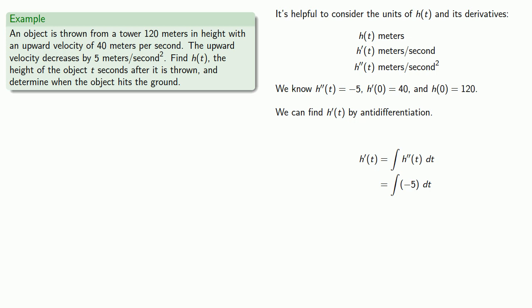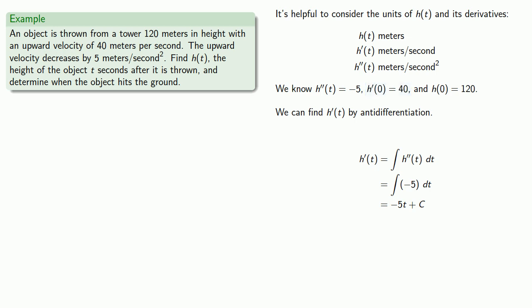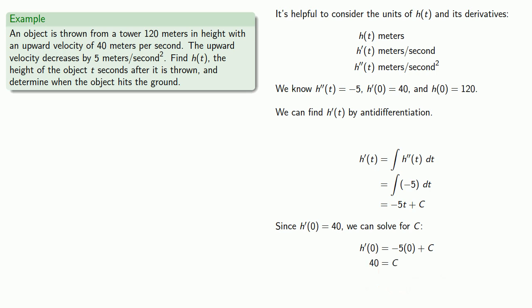So I'll find the antiderivative of negative 5, which will be minus 5t plus c — don't forget that all-important constant. And here's where it's important to know that h prime of 0 equals 40, so I can solve for that constant. I get c equals 40, and h prime of t is minus 5t plus 40 meters per second.